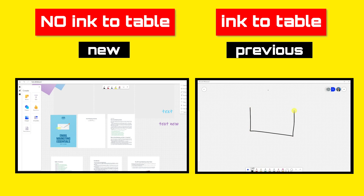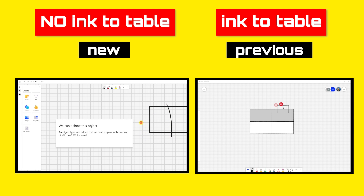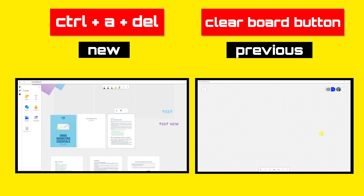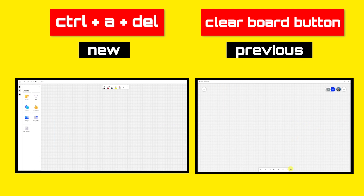They also changed the ink features a little bit. The most relevant thing here is that you cannot ink to table anymore, so you cannot draw a square, cut it in half, and create a two-cell table. And let's say you're drawing something quickly on the board but then you want to erase it and start from scratch — before you could clear all content, but now this option is not there.